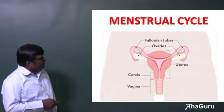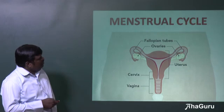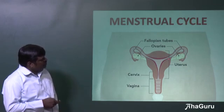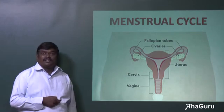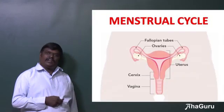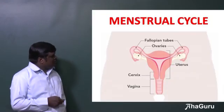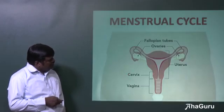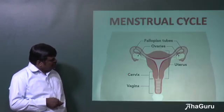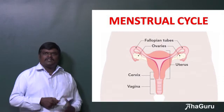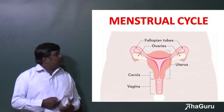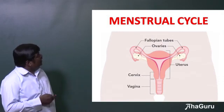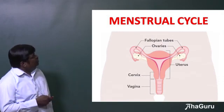It consists of a pair of ovaries, a pair of fallopian tubes, and a uterus which is lined by cells called endometrial cells. The lower part is called cervix and this part is called vagina. Now we are going to learn in detail about the menstrual cycle.